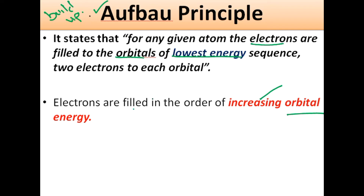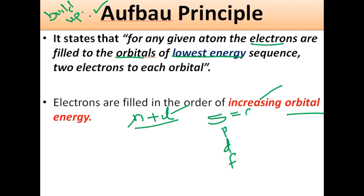In order to determine the energy of an orbital, we have one rule known as the n plus l rule, where n is the principal quantum number and l is the azimuthal quantum number. Now, for s, p, d, f orbitals: for s, l is zero; for p, l is one; for d, l is two; and for f, l is three.